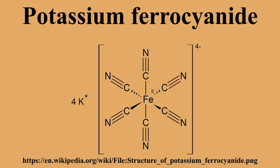Historical production. Historically, the compound was manufactured from organically derived nitrogenous carbon sources, iron filings, and potassium carbonate. Common nitrogen and carbon sources were torrified horn, leather scrap, offal, or dried blood.